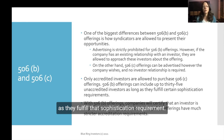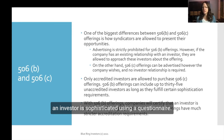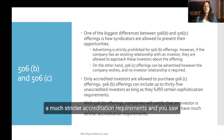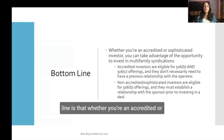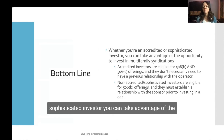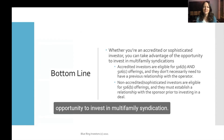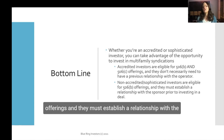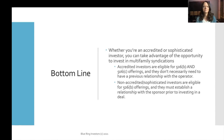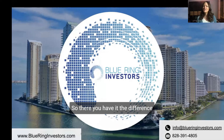Only accredited investors are allowed to purchase 506c offerings. 506b offerings can include up to 35 non-accredited or sophisticated investors, as long as they fulfill the sophistication requirement. With 506b offerings, companies certify that an investor is sophisticated using a questionnaire. With 506c offerings there are much stricter accreditation requirements. The bottom line is that whether you're accredited or sophisticated, you can take advantage of multi-family syndication. Accredited investors are eligible for both 506b and 506c offerings and don't necessarily need a prior relationship with the operator. Non-accredited or sophisticated investors are eligible for 506b offerings and must establish a relationship with the sponsor prior to investing.